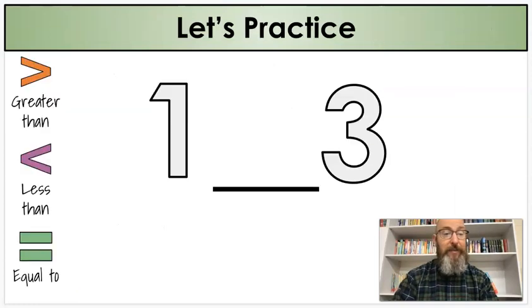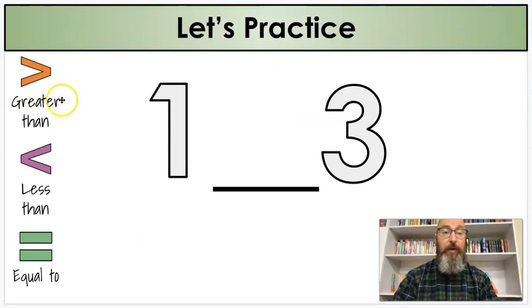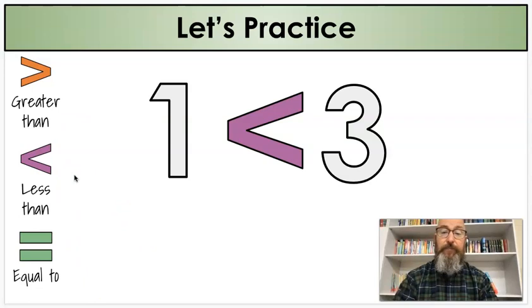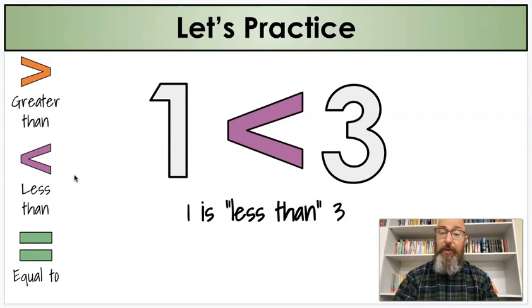Let's do a few practice ones together. I have a one and a three — let's compare them. Is one greater than three, less than three, or equal to three? I know that one is smaller, so I'm going to use less than. My sentence would be: one is less than three. Already makes sense, doesn't it?